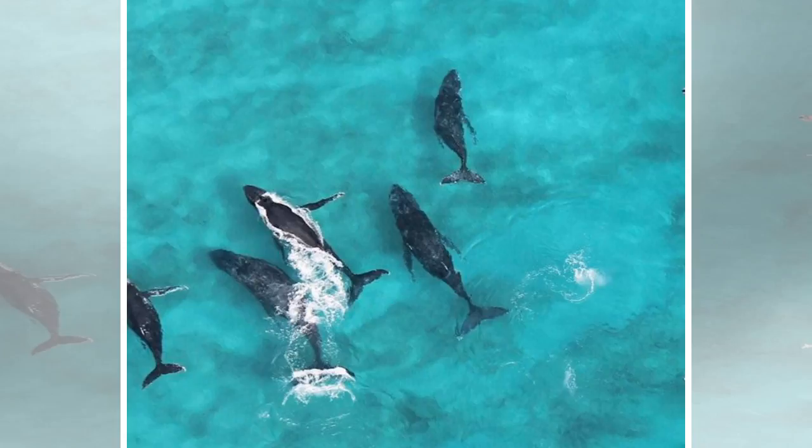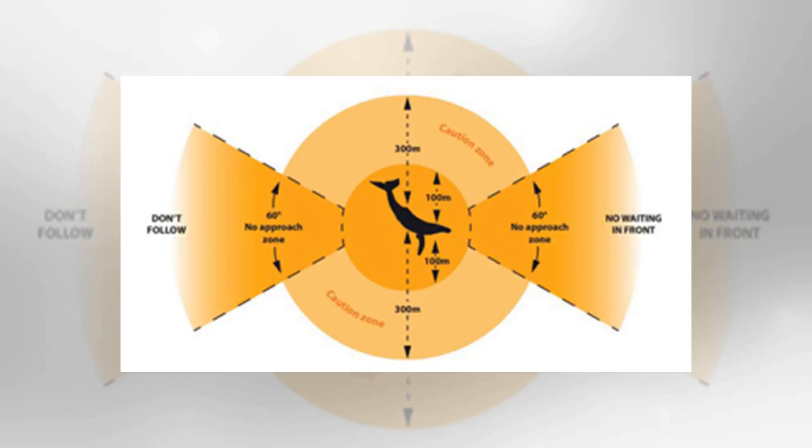Generally speaking, whales don't like things coming towards them. The national guidelines also state not to approach a whale from directly in front or directly behind the animal, but to keep to the sides of it so it does not feel trapped.